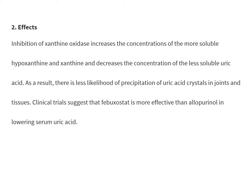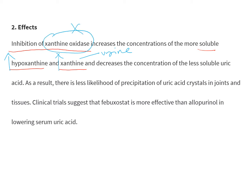Now, what are the effects? Inhibition of xanthine oxidase will increase the concentration of the more soluble hypoxanthine and xanthine. Xanthine and hypoxanthine are more soluble, meaning they can easily be excreted through urine. Blocking xanthine oxidase will decrease the concentration of the less soluble uric acid. With decreased uric acid formation, there is less likelihood of precipitation of uric acid crystals in joints and tissues — ultimately solving the problem.